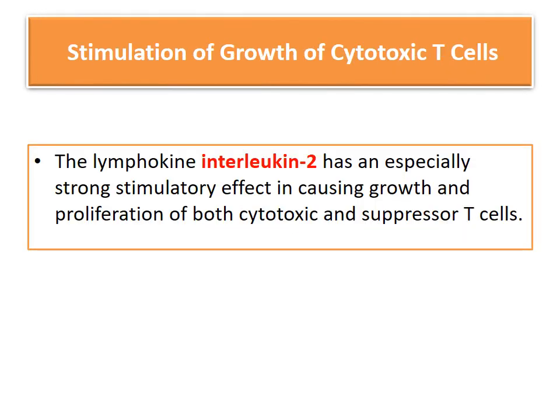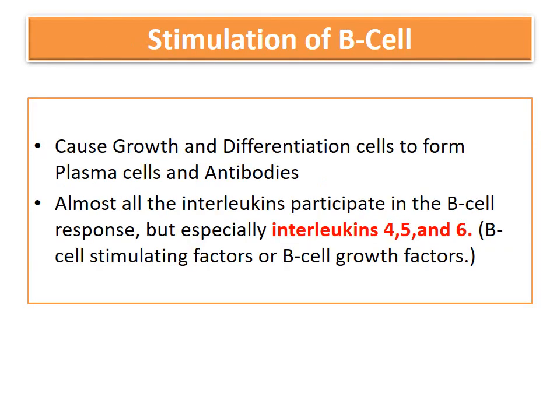The second function of helper T cells is stimulation of other types of T cells. These helper T cells stimulate the growth and proliferation of both cytotoxic T cells, also known as killer cells, and suppressor T cells by secreting interleukin 2. In the absence of helper T cells, both of these have less potent effects in their functions.